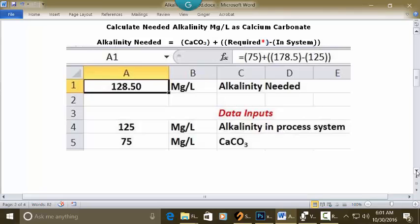75, plus two open parentheses, 178.5, close parentheses, minus sign, open parentheses, 125, two close parentheses, press enter, and 128.50 milligrams per liter of alkalinity as calcium carbonate is your answer. So that's your answer.